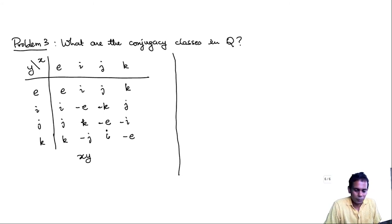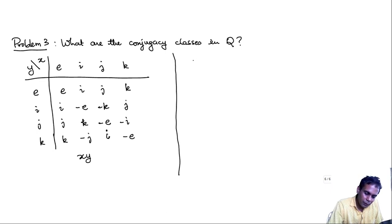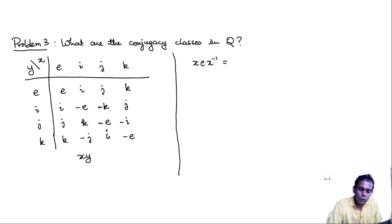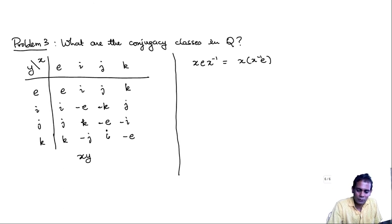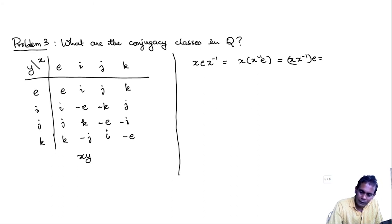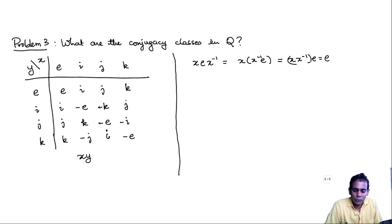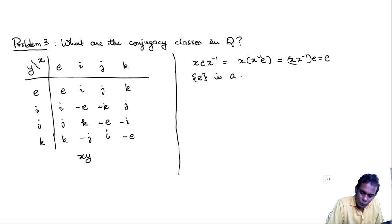Let's solve this problem. First, let's take the element e. What is the conjugacy class of e? For any element x in Q, x·e·x⁻¹ = x·x⁻¹·e = e by associativity, since e is the identity matrix and commutes with everything. So no matter what x you take, x·e·x⁻¹ = e. Therefore the singleton {e} is a conjugacy class.